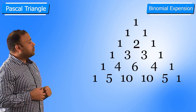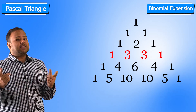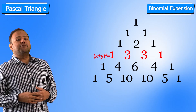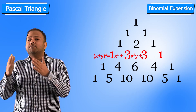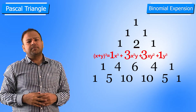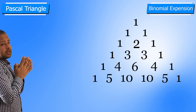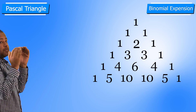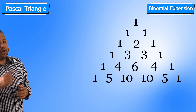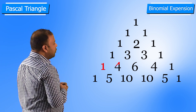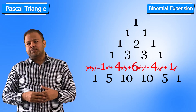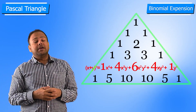Similarly, the third row gives coefficients 1, 3, 3, and 1 — that is for (x+y)³. You can verify using the formula. For (x+y)⁴, the coefficients are 1, 4, 6, 4, 1. So this keeps on going, and that is the beauty of this triangle.